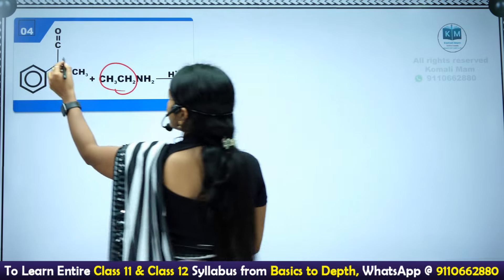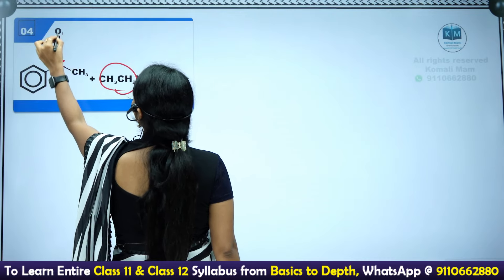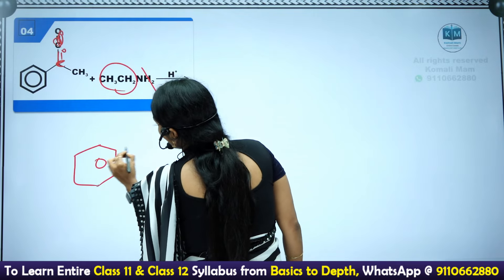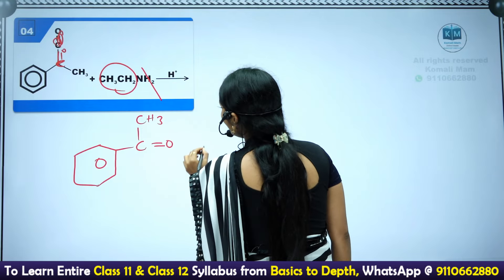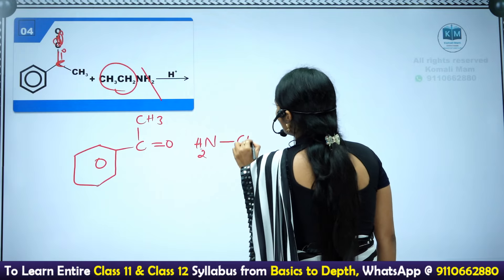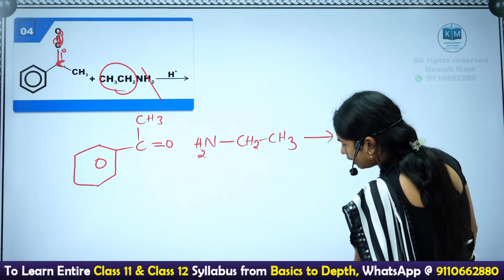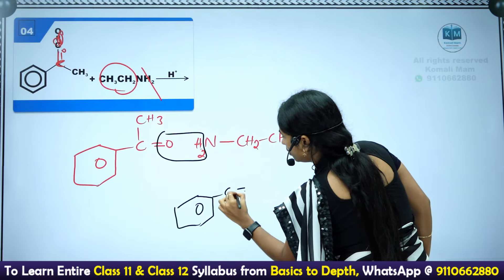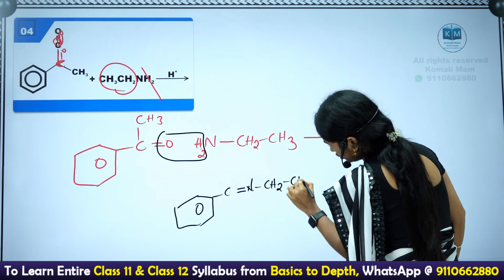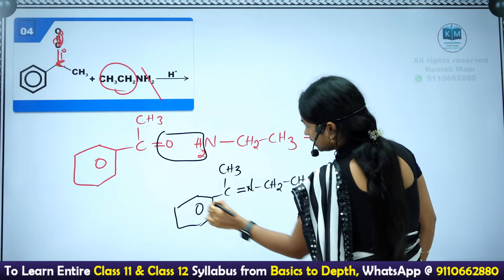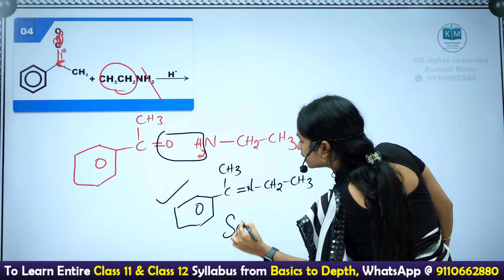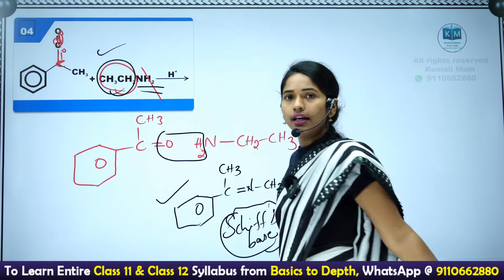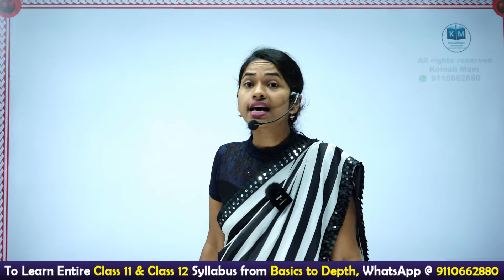Next example: reacting a ketone (with a C=O group) with an alkylamine (NH2-CH2CH3, for instance). Removing the oxygen and two hydrogens gives C=N-CH2CH3. The product here, where an amine (NH2 with an alkyl group) reacts with a carbonyl compound to give C=N-alkyl, is called a Schiff's base.